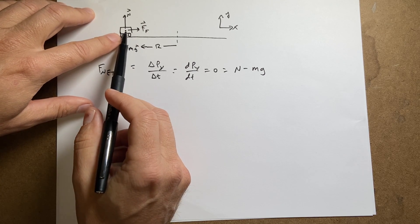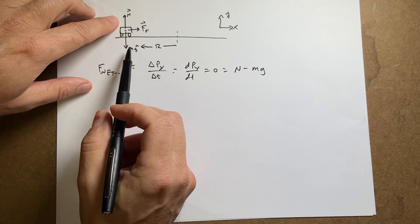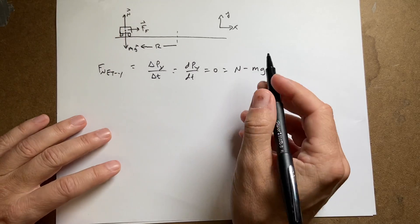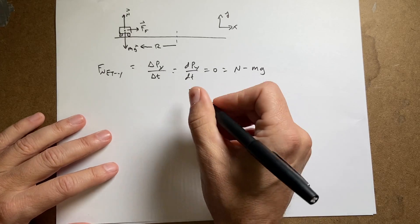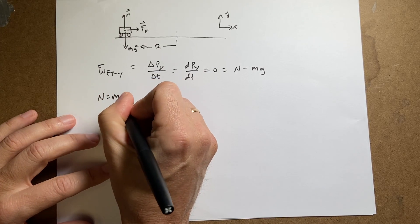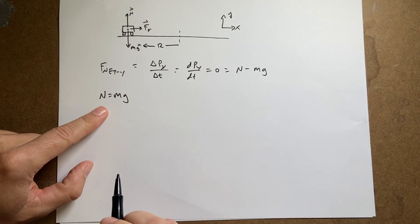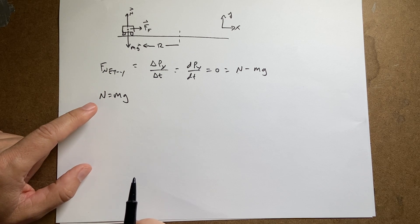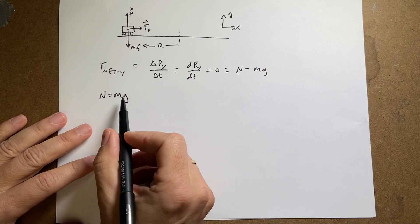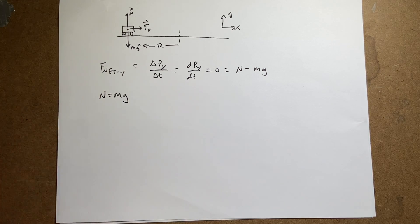So in this case, the mg has a negative y component. The n has a positive y component. So that's how I get this. And from this I get n equals mg. Now be careful with this. This is true here. This is not always true. The normal force is not always equal to the weight.